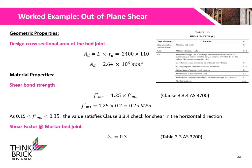The design cross-sectional area of the bed joint under consideration, AD, is calculated to be 2.64 × 10⁵ mm². The shear bond strength of the masonry, F-MS, is calculated to be 0.25 MPa, which satisfies the check for shear in the horizontal direction as stated in Clause 3.3.4 of AS3700.